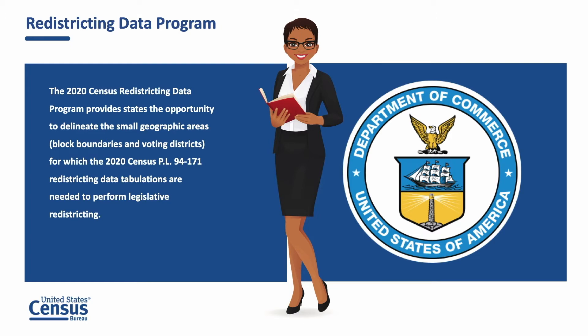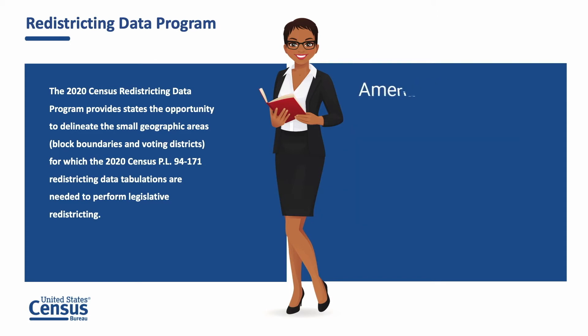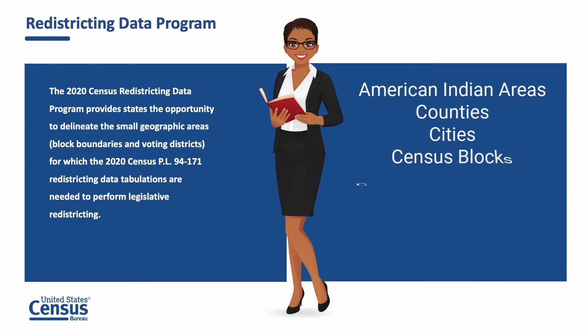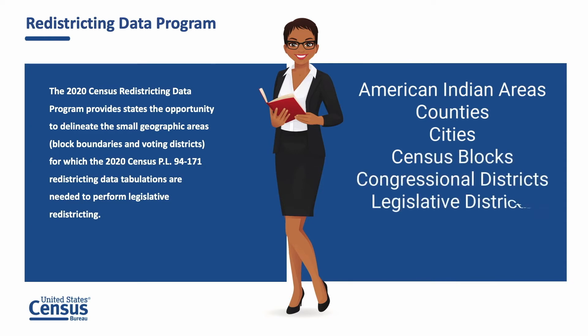Required by law under the provisions of Title 13, Section 141C of the United States Code, the Secretary of Commerce is required to provide the officers or public bodies having initial responsibility for the legislative apportionment or districting of each state with the opportunity to specify geographic areas, such as blocks or voting districts, for which they wish to receive decennial census population counts by April 1st of the year following the decennial census. The Secretary is required to furnish state officials or their designees with population counts for American Indian areas, counties, cities, census blocks, and state-specified congressional, legislative, and voting districts.